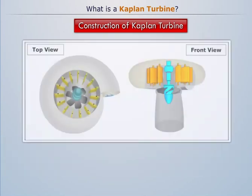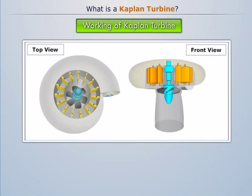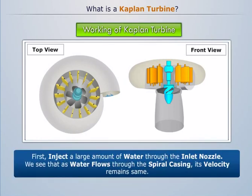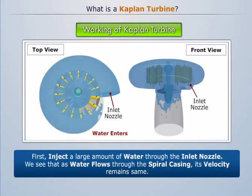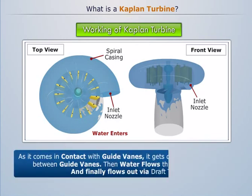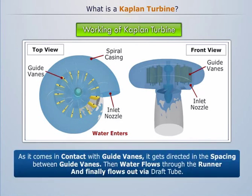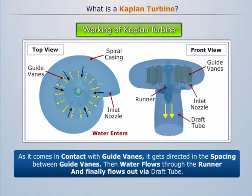Now let's understand the working of the Kaplan turbine. First, a large amount of water is injected through the inlet nozzle. As water flows through the spiral casing, its velocity remains the same. As it comes in contact with the guide vanes, it gets directed into the spacing between the guide vanes. Then water flows through the runner and finally flows out via the draft tube.